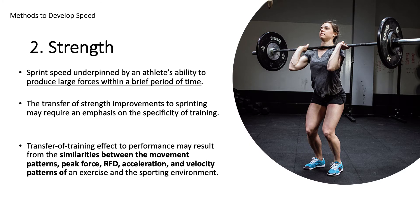The second way to develop speed is by improving strength. Eccentric strength is developed first, then you want to convert that strength to a high rate of force development through plyometric training. Strength training is really time under tension — maximize that by loading with a slow eccentric and working on eccentric strength, then convert that to power and rate of force development by moving the load quickly. The transfer of the training effect to performance results from similarities between movement patterns, peak forces, rate of force development, acceleration and velocity patterns of an exercise, and the sporting environment. Specificity of training and overload is essential to ensure high transferability to athlete performance.